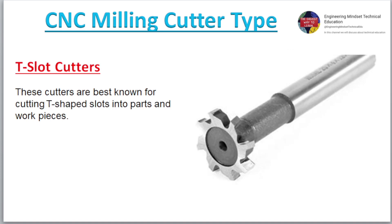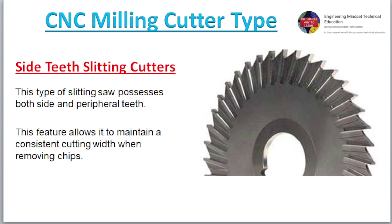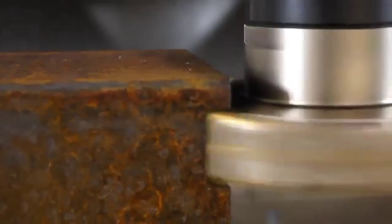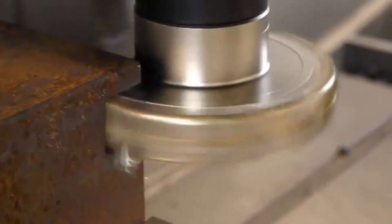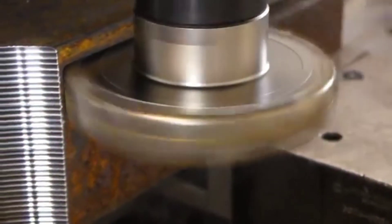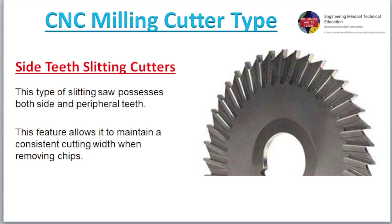T-slot Cutters. These cutters are best known for cutting T-shaped slots into parts and work pieces. Side Teeth Slitting Cutters. This type of slitting saw possesses both side and peripheral teeth.